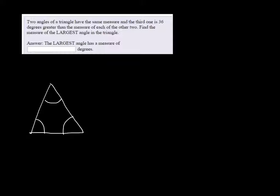So it says that two angles are the same measure. So we'll say that these two are the same, and we'll call them x. And the third one is 36 degrees greater than the other two, so that'll be x plus 36.